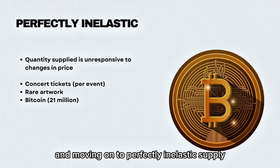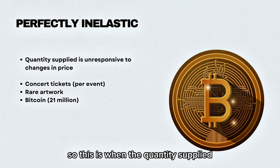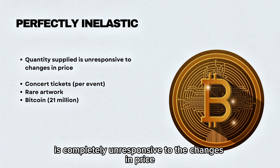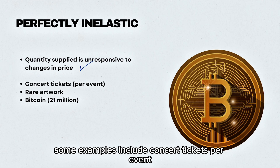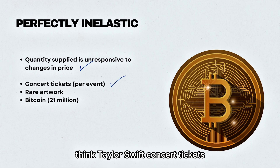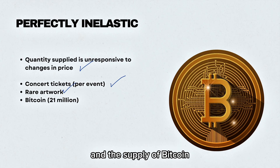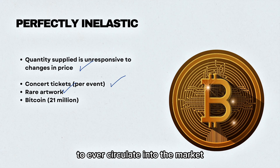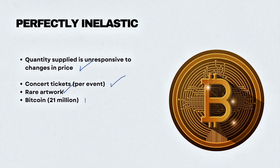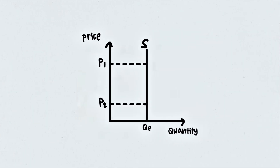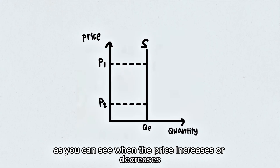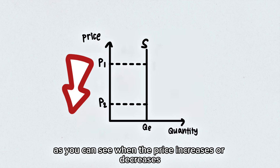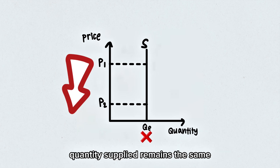Moving on to perfectly inelastic supply. This is when the quantity supplied is completely unresponsive to changes in price. Some examples include concert tickets per event — think Taylor Swift concert tickets — rare artwork, and the supply of Bitcoin, of which there are only 21 million to ever circulate in the market. In the diagram, when price increases or decreases, quantity supplied remains the same.